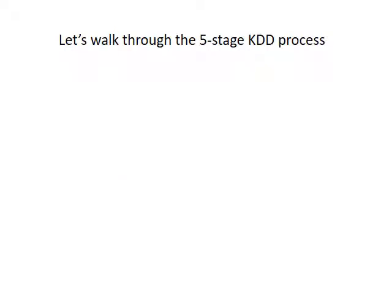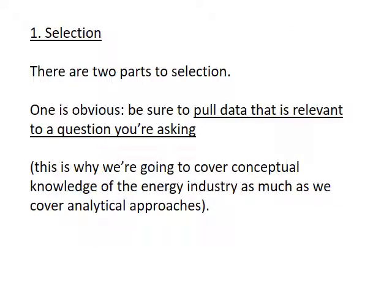Let's walk through this five-stage process. The first step is selection — this is sort of what people on the street would think data mining means, where we're really pulling data from some sort of database. There are two important parts: the first is obvious — we want to pull the right data, or at least the data that's relevant to the question we're asking. We don't have to know exactly what we need, but we have to be pretty close.